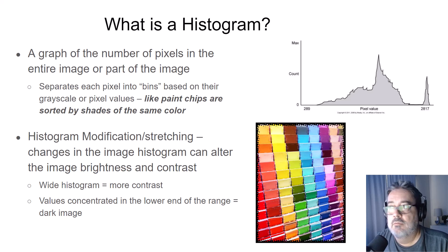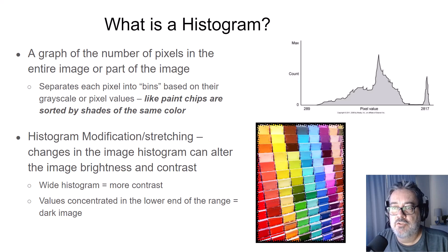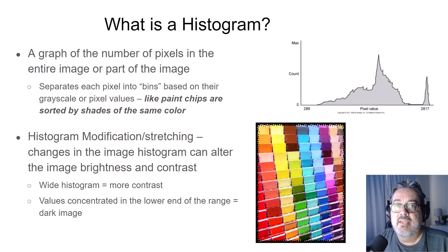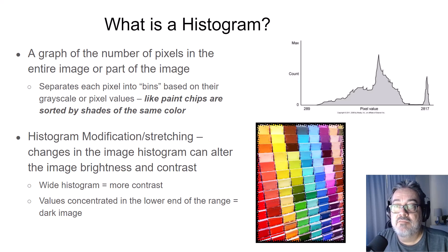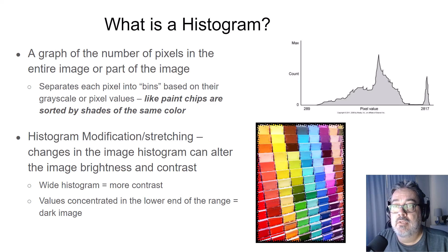Picking up where we left off, what is a histogram? A histogram is a graphical representation of pixels in either the entire image or a select portion of the image. The graph separates each pixel into bins based on their grayscale or pixel values, kind of like paint chips are sorted by shades of the same color. Anytime you modify or stretch the histogram, you can manipulate the brightness and contrast of the image. A wide histogram results in more contrast.